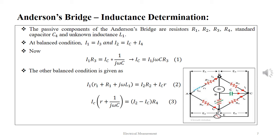Also IC into small r plus 1 by J omega C is equal to I2 minus IC into R4.